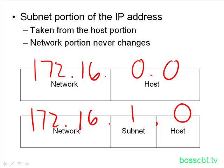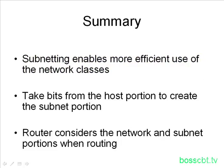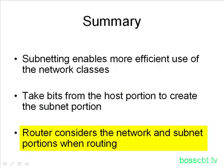When a router received a packet that was not subnetted, it would just look at the network portion in order to route it. But now when a router receives a packet that has been subnetted, it's going to look at the network portion and also look at the subnet portion, because this represents a separate network. To summarize what we've covered: subnetting enables us to be more efficient with our use of IP addresses, so we're not stuck with a huge class B or class A network with thousands of hosts we'll never use. With subnetting, we can chop it up into smaller subnets which better serve our purposes. We need to take some bits or an octet from the host portion to create the new subnet portion. When a router considers routing a subnetted packet, it looks not only at the network portion but at the subnet portion as well.